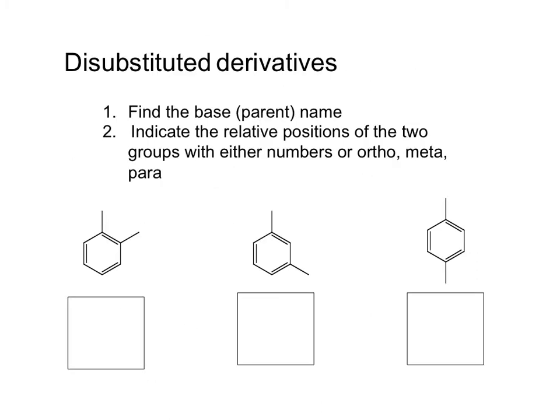If it's a disubstituted benzene, you first want to attempt to find a parent name from that list. Then you need to indicate the relative positions of the two groups. If they're side by side, that's called ortho, or we can use numbers — 1,2. If they're separated by one carbon, that's meta, or 1,3. And then para if they're opposite, or alternately 1,4.